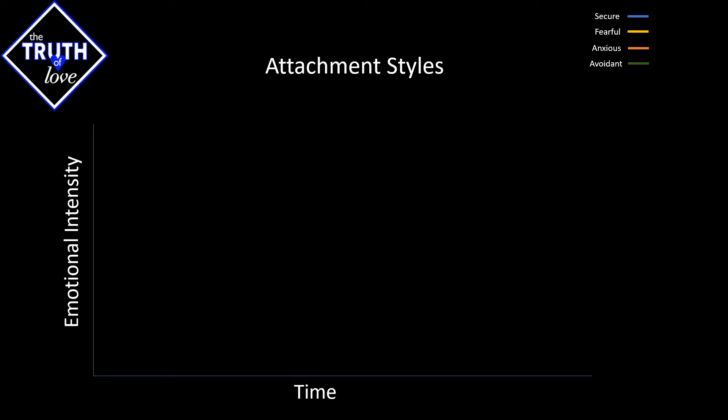When you're dealing with different attachment styles with people, let's say secure attachment, their emotional intensity tends to be very flat. It's not going to one extreme or another. They're not overly positive, they're also not overly negative.